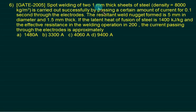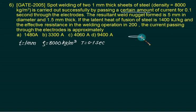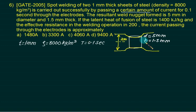Spot welding of two 1 mm thick sheet plate. So we have thickness of plate 1 mm, density is 8000. Is carried out successfully by passing a certain amount of current. We want to find out that current for 0.1 second. So time equals to 0.1 second. The resultant weld nugget formed is 5 mm in diameter and 1.5 mm thick cylinder. Nugget is forming the cylindrical shape. So this one is nugget, diameter of nugget is 5 mm, it is 1.5 mm. So this thickness is actually 2 mm because of indentation.